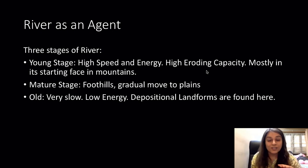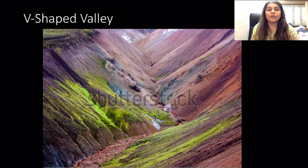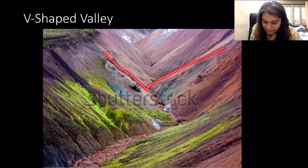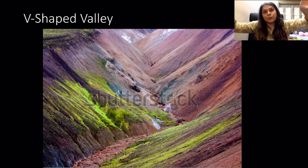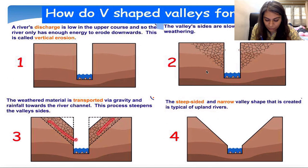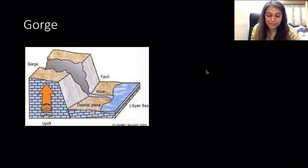The first landform is the V-shaped valley, formed in the young stage of the river. Because it is young it has high energy and speed, so it cuts through the rocks directly with vertical erosion. The rocks exposed on top also suffer weathering from the sun and eventually erode away, creating the characteristic V shape.